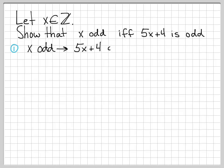For the first case, I'm going to show that when x is odd, this implies that 5x plus 4 is odd. Let's assume x is odd. What does it mean for x to be odd? That means that x can be written as 2n plus 1 for some n in Z. That's just the definition of an odd number.